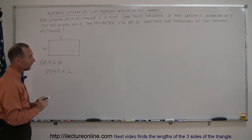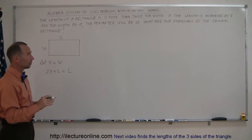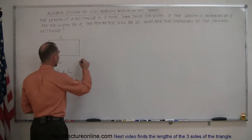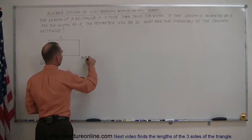Now they tell us if we increase the length by eight and the width by five, the perimeter will be 60. So here are the new dimensions.